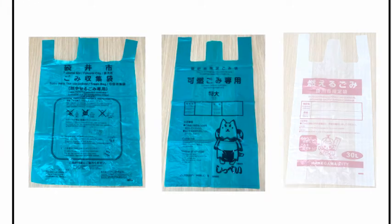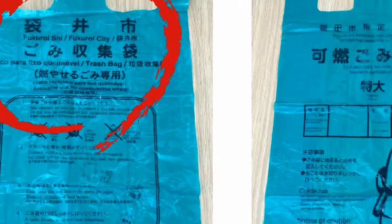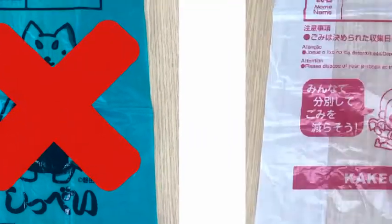In Fukuroi City, only trash in the green garbage bags designated by the city can be thrown away. Please be aware that you cannot use garbage bags from other cities. The next step is the separation of non-burnable garbage.